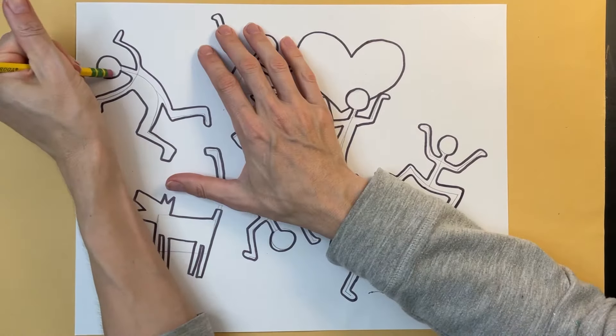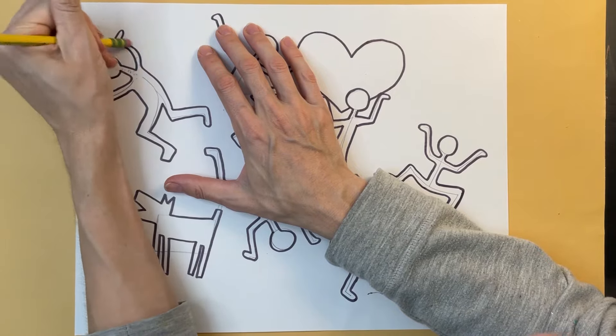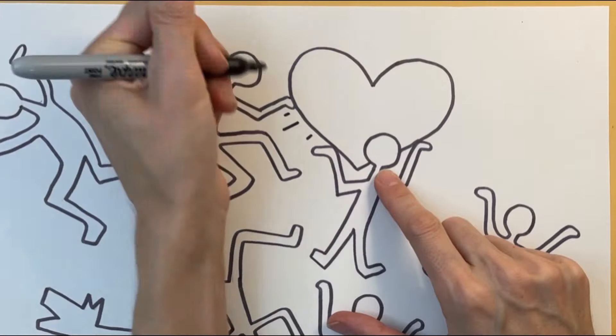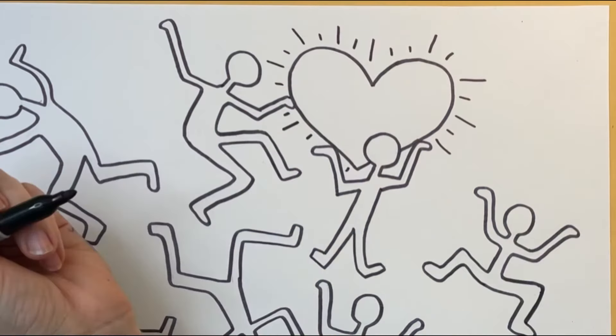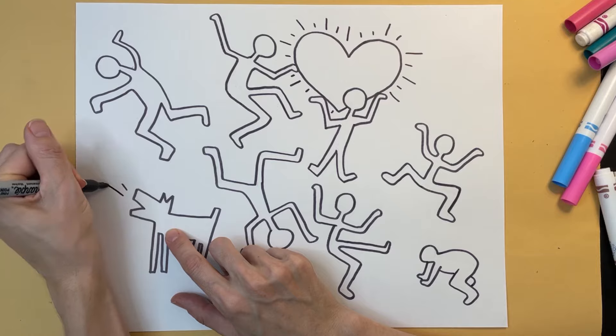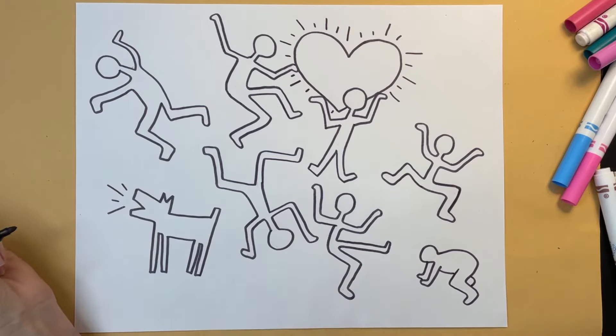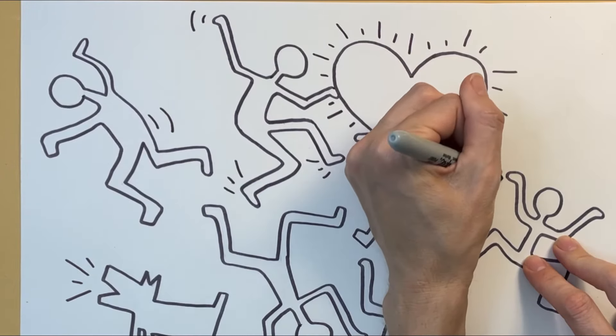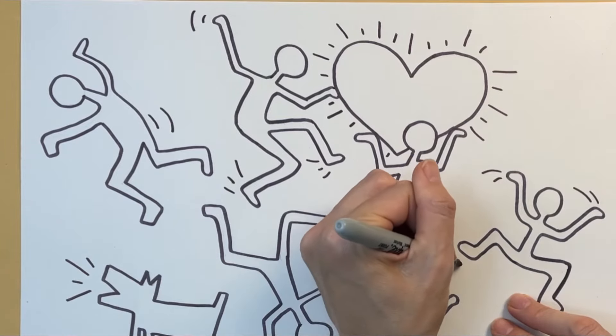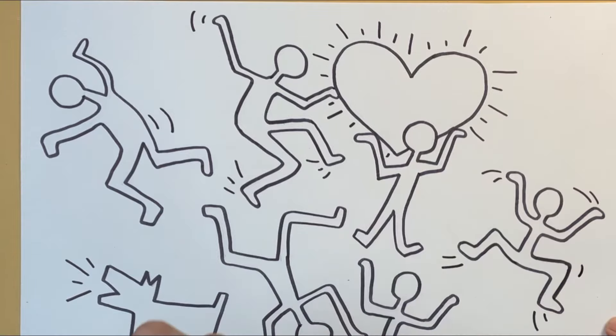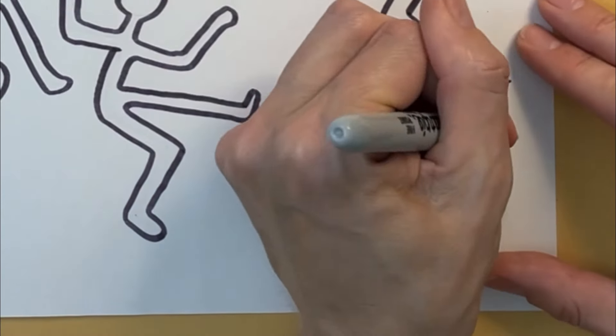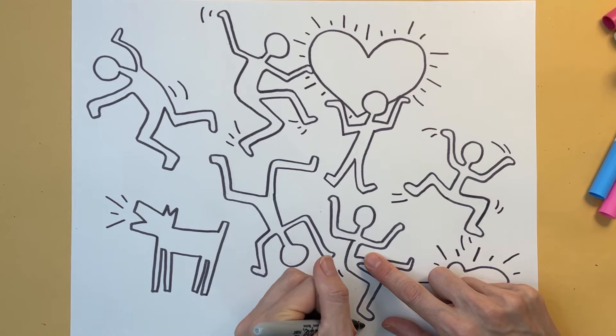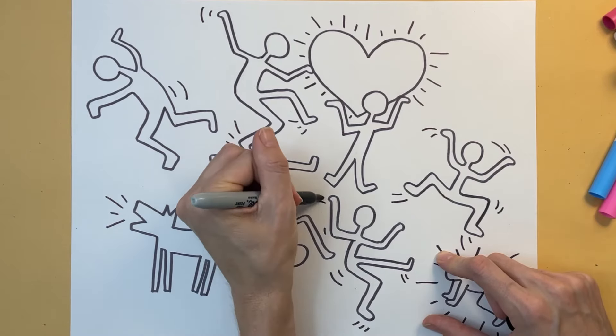Once I'm done drawing each stick figure I'm going back and carefully erasing my pencil marks. Now I'm adding some lines radiating out from the heart. I'm adding lines coming out of the dog's mouth so it looks like it's barking. I'm adding some lines outside my figures to emphasize the fact that they are moving. I'm drawing some straight lines radiating outward from the radiant baby and finishing up with a few more lines around my figures that suggest movement.